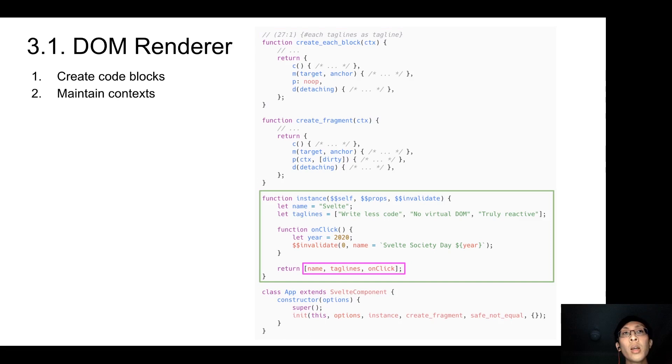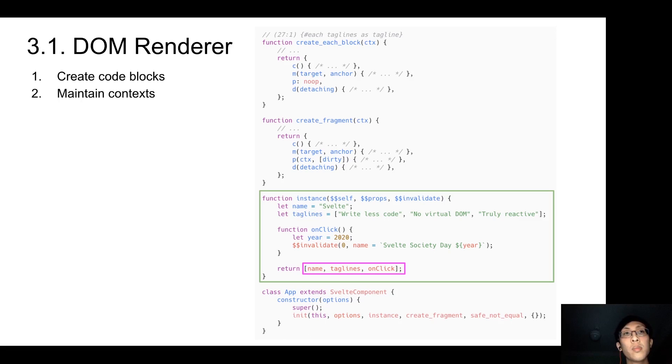The next thing you see is called the instance code block. Here it returns an array of variables to be used by the fragment block, which we call context. These variables are the ones to be reactive. And Svelte will change all the references in the template to point to this array. Next, Svelte will instrument assignments by wrapping all the update statements and assignment statements to use $invalidate.